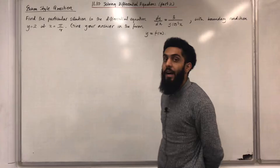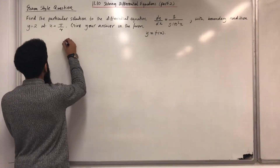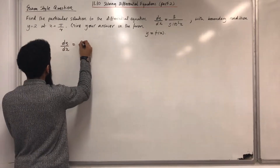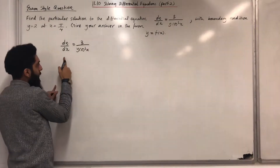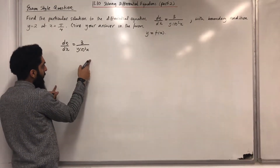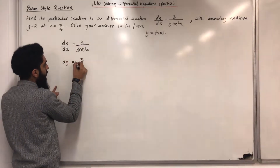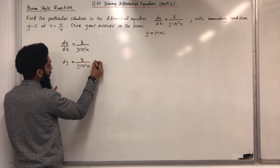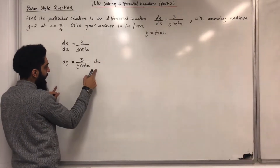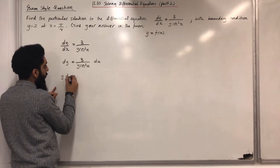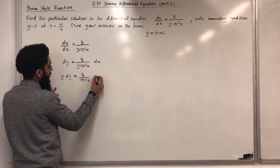I'm going to start off by writing the differential equation: dy/dx = 3 / (y cos²x). The first step is to multiply both sides by dx to give dy = 3 / (y cos²x) dx. The next step is to multiply both sides by y to give y dy = 3 / cos²x dx.